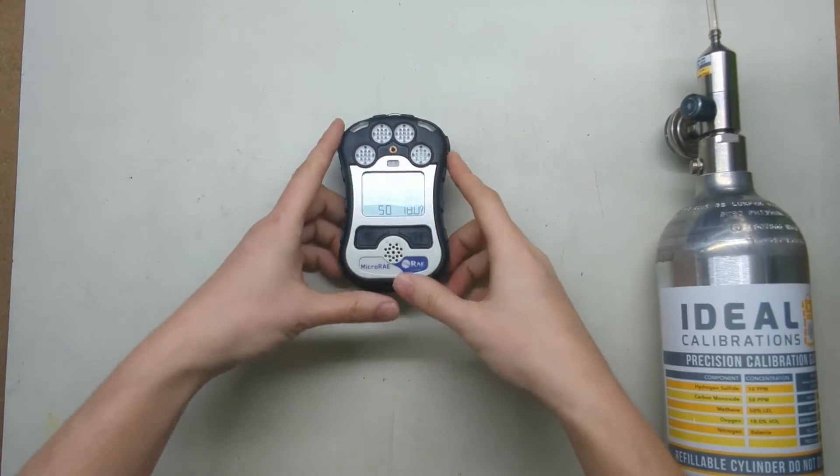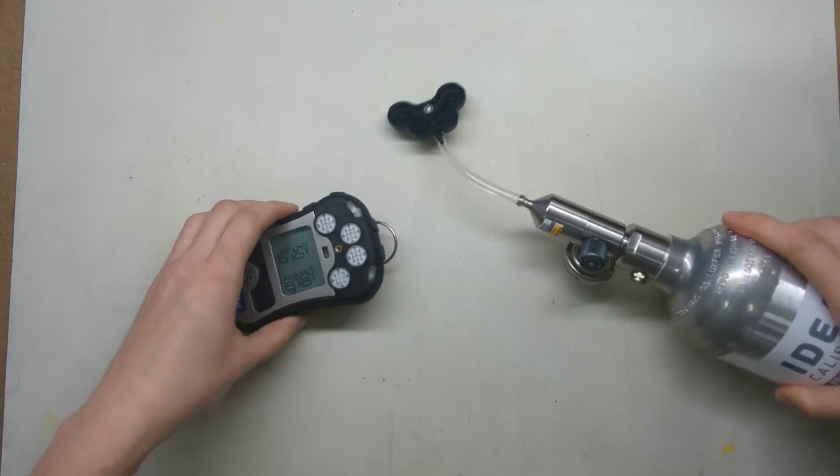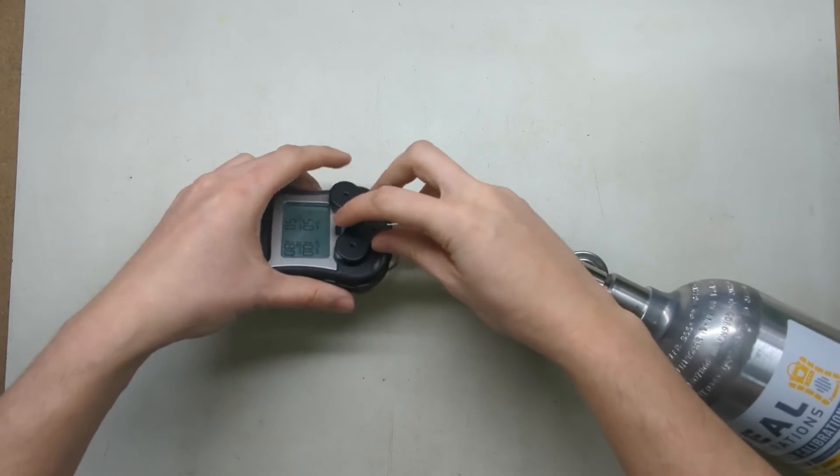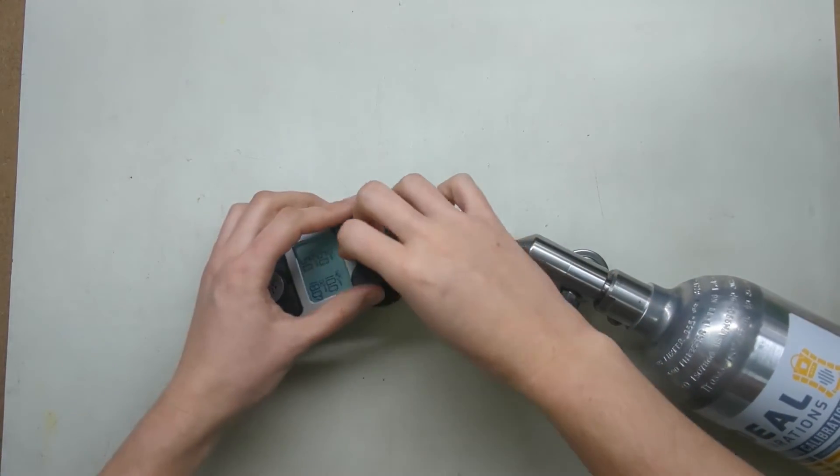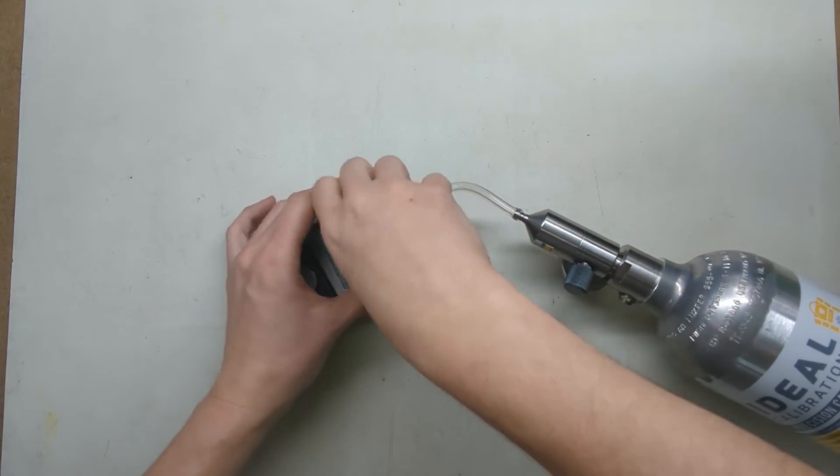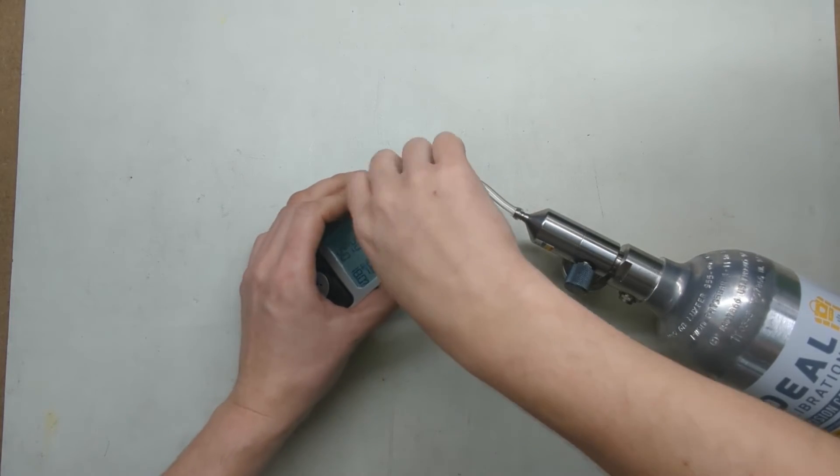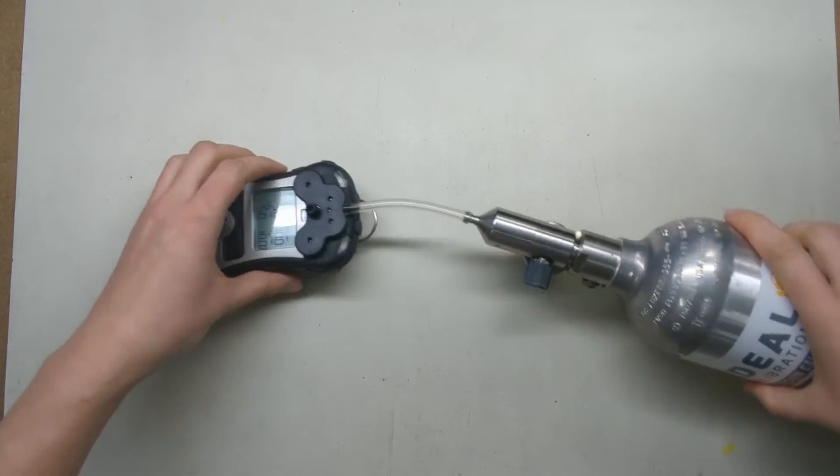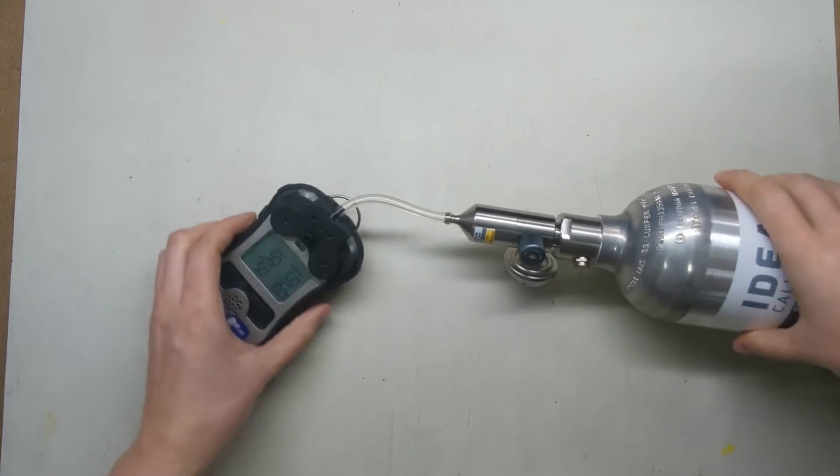Now that we've verified the gas, we want to attach the calibration adapter to the inlet, the diffusion inlet here. Go ahead and pop this over, get the screw lined up and screw it in. Sometimes it'll miss threads, so be careful. Don't have to do it too hard, just get it on.